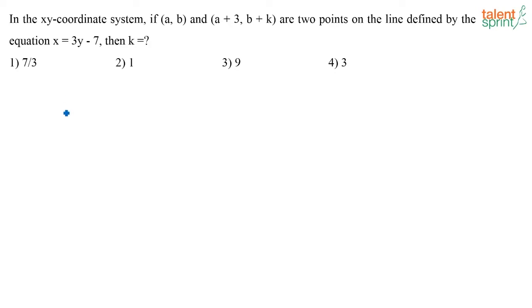So what is given here? I have a line, x is equal to 3y minus 7, and both of these are points on the line. So what does that mean? I can write this equation as x minus 3y plus 7 is equal to 0.